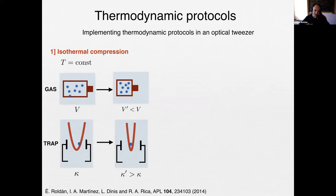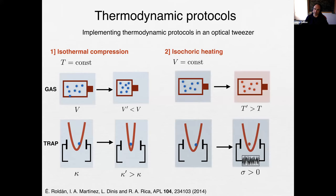An isothermal compression is easy: we increase the laser intensity, making the trap stiffer and the effective volume smaller. An isochoric heating (as in the Stirling engine) is also simple: we don't change the trap but add noise, so the effective volume stays the same while the fluctuations increase — the particle is effectively hotter. These are straightforward from what I've been teaching. What is not obvious is how to obtain adiabaticity.